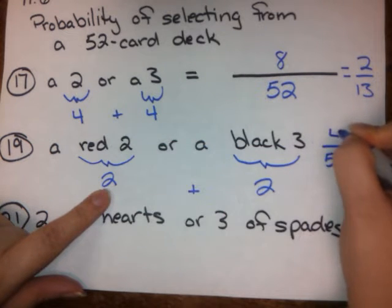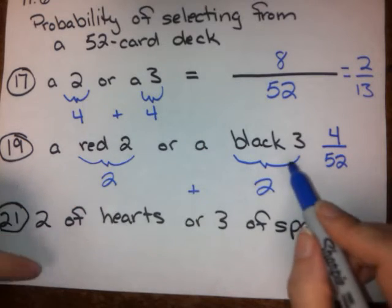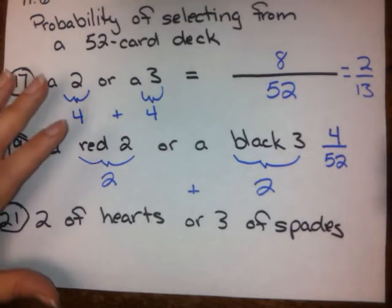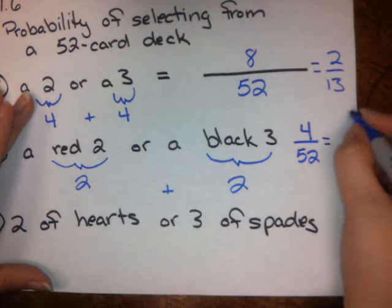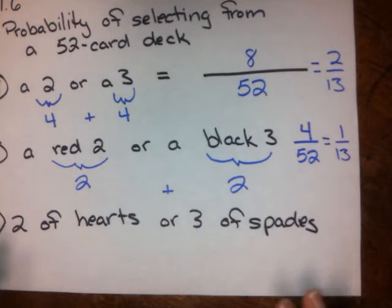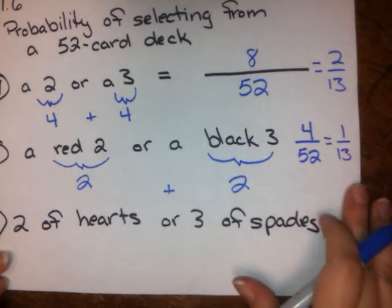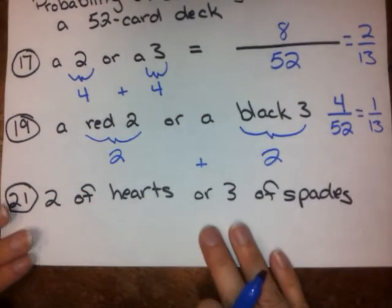Add them together - those are four successes, four things that could happen that would be successful outcomes out of that sample space. So we get 4 over 52, which is the same as 1 over 13. Either of those two answers is acceptable. You do not need to feel like you need to reduce those fractions if you don't want to.